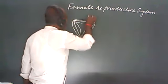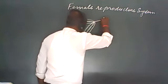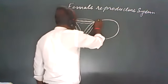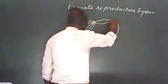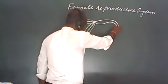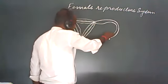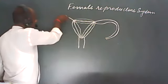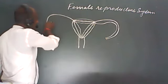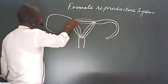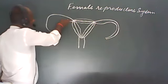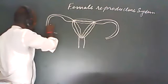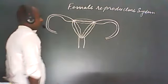We have to draw in such a way. After that there should be a tube-like structure which we have to draw. There should be a tube-like structure which we have to draw from both sides.